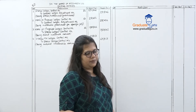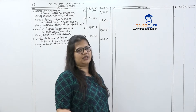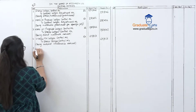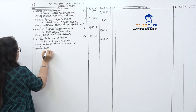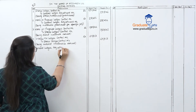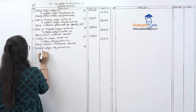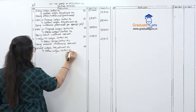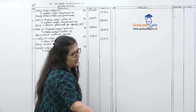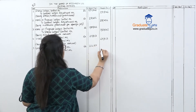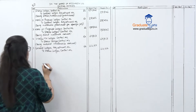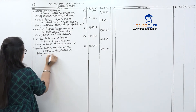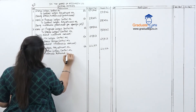Next, stores returned to suppliers. When we purchased, the entry was Stores debit to GLA. Now on return, we reverse it: General Ledger Adjustment Account debit, to Stores Ledger Control Account. Amount: 22,187. Narration: being materials returned to suppliers.